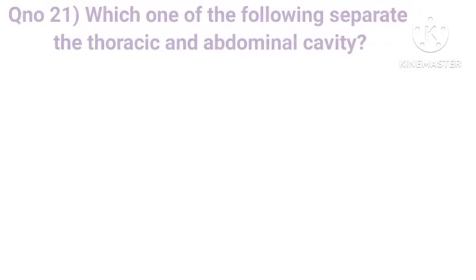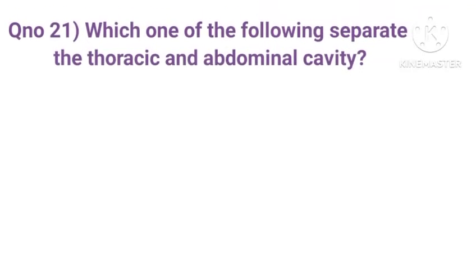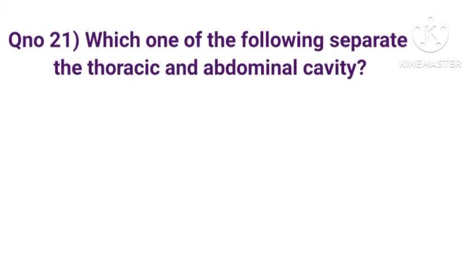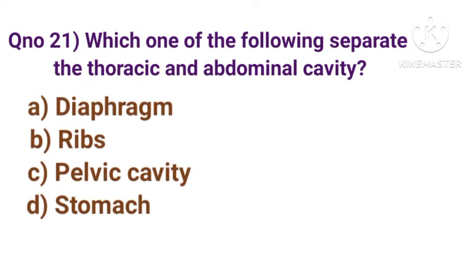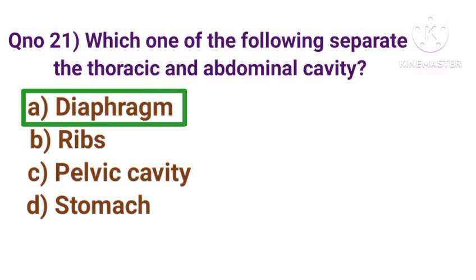Question number 21. Which one of the following separate the thoracic and abdominal cavity? Correct answer is option A, diaphragm.